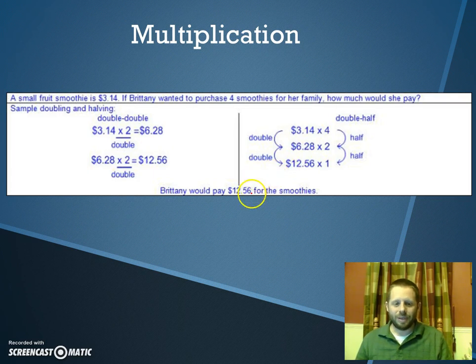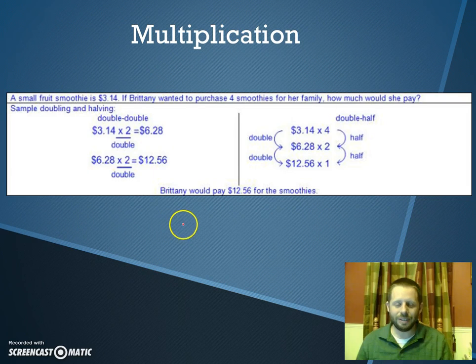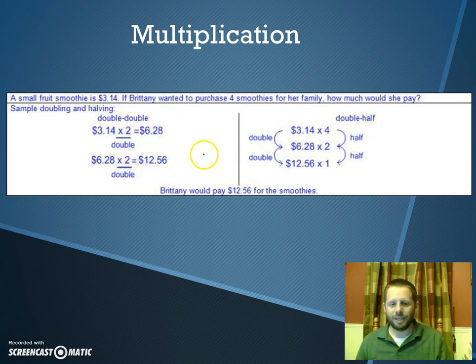That concludes our talk on multiplication of decimals. We've looked at a couple different ways using partial products, area models, this little trick with doubling and halving. Another way we haven't shown here, but you probably learned, is of course using a standard algorithm. But these are some other strategies besides just the regular standard algorithm that we typically use, that might make multiplying your decimals a little bit easier.